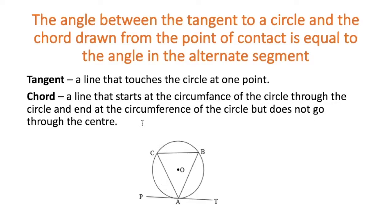When you look at the theorem, it talks about the angle between the tangent of the circle and the chord drawn from the same point. So our tangent A-T and our chord A-B form an angle between them — angle B-A-T. The theorem says that angle is equal to the angle formed in the alternate segment.